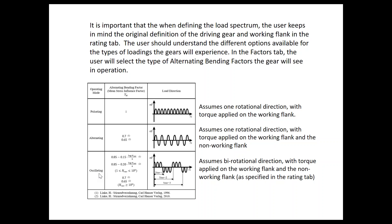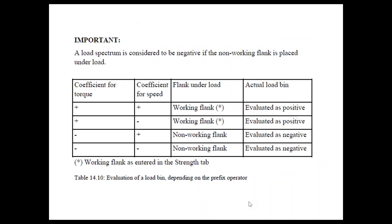Oscillating operating mode is an example of: driving forward, then driving backwards, then forward, then backwards across the load profile. It assumes bi-directional rotation with torque applied on the working flank and the non-working flank, with respect to your rating tab definition of which flank is driving and whether it's clockwise or counterclockwise.